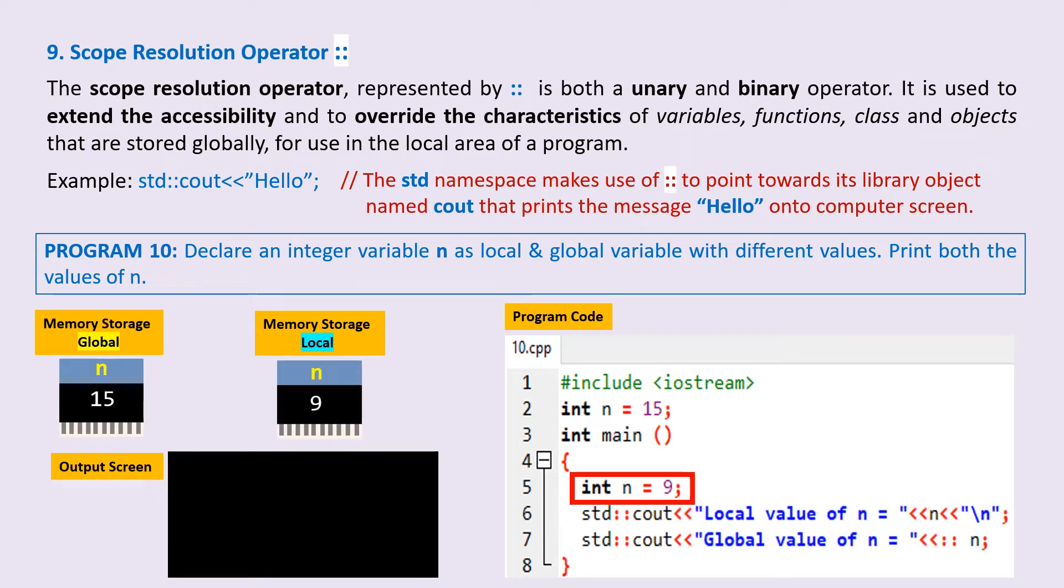On lines 6 and 7, we have instructed to cout or to print both these values. So first, the local variable n is printed with the cout n command as we normally do. Local value of n equals 9 is printed. Then backslash n prints the new line and control goes to next line on the output screen.